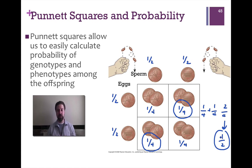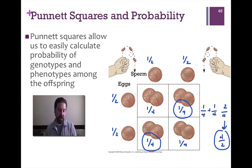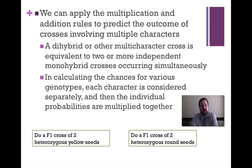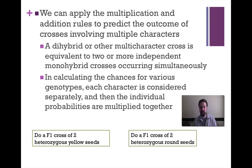In the first case, the multiplication rule lets us determine the overall probability of a certain genotype of offspring from a monohybrid cross. Then we go one step further with the addition rule when there are multiple probabilities of certain events happening. We can also use both rules to predict the outcome of crosses involving multiple characters. A dihybrid cross is nothing more than two independent monohybrid crosses occurring at the same time, because those alleles are independently assorting.